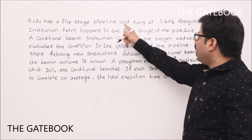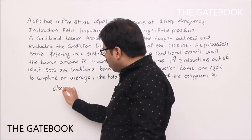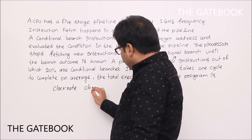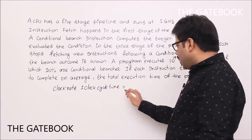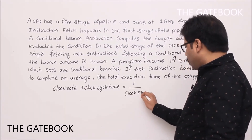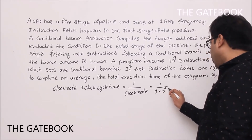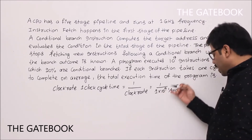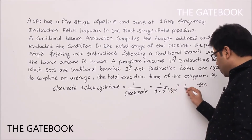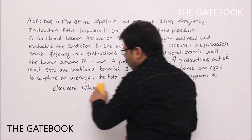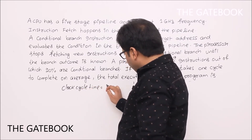A CPU has a five-stage pipeline and runs at one gigahertz frequency — what does it mean? One gigahertz frequency is called the clock rate. The relation is: clock cycle time = 1 / clock rate. Here, 1 / 1 GHz = 1 / 10^9, which is 10^−9 seconds — that is one nanosecond. So the clock cycle time is one nanosecond.